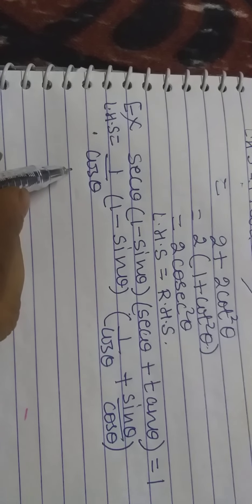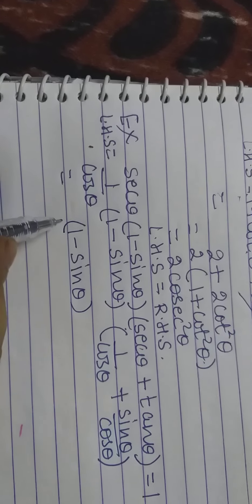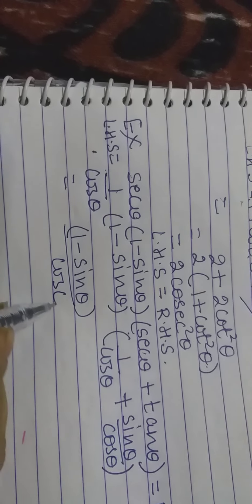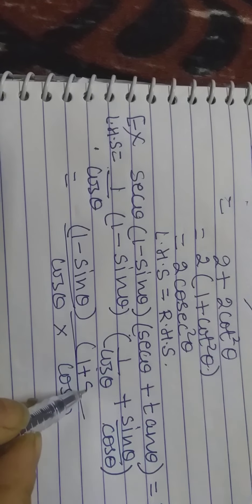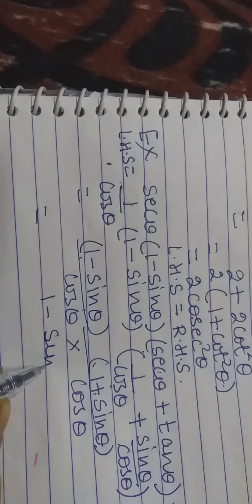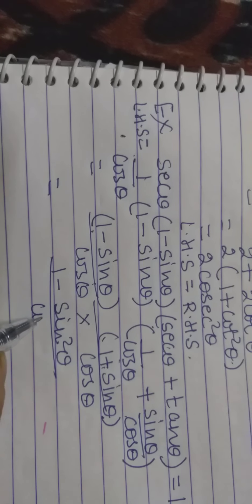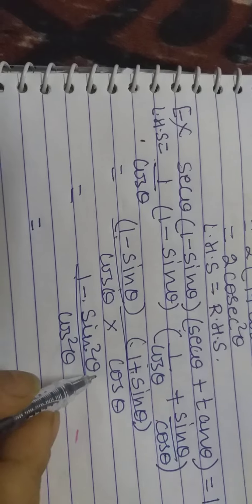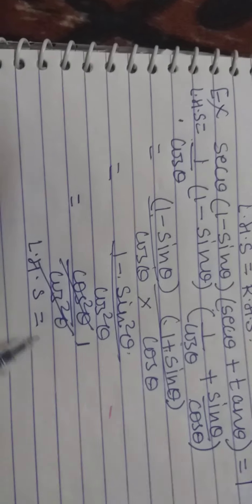I write left hand side: 1 minus sin theta, and inside the bracket I take cos theta as an LCM, so it becomes 1 plus sin theta over cos theta. Now 1 minus sin theta and 1 plus sin theta gives 1 minus sin square theta — using A minus B times A plus B equals A square minus B square. So cos theta times cos theta is cos square theta. And 1 minus sin square theta is cos square theta. So cos square theta upon cos square theta equals 1. Left hand side equals right hand side.